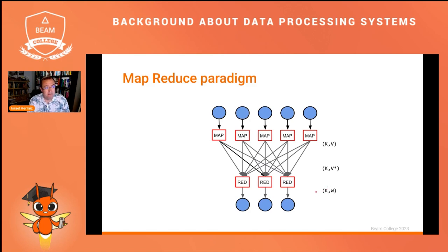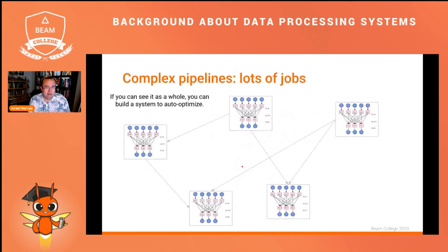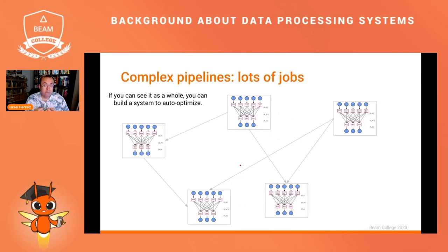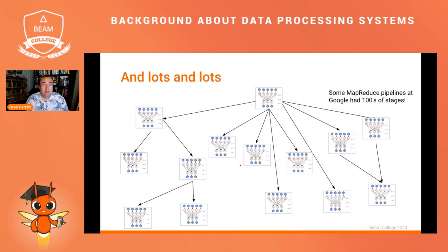However, this was still a little bit limiting because you could only express one function for Map and one for Reduce. If you needed to do something more complex, you couldn't do it with just one job — you had to build complex pipelines by chaining several jobs together. By doing this by hand in your own code, the system wasn't able to optimize how data was processed across stages, which was inefficient. Very soon in complex use cases, users started writing pipelines with hundreds of stages, and the data processing systems could not optimize different stages together. Each stage was an independent piece that couldn't be automatically optimized.